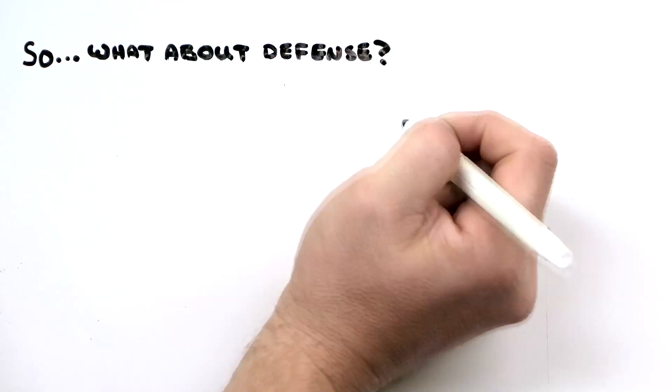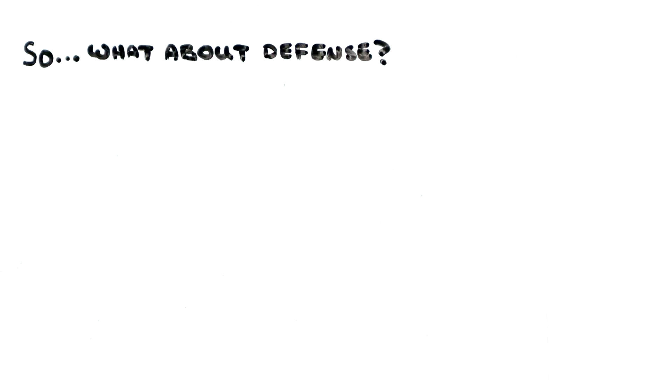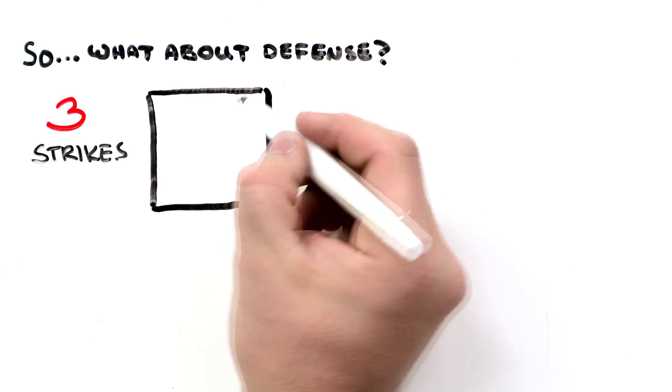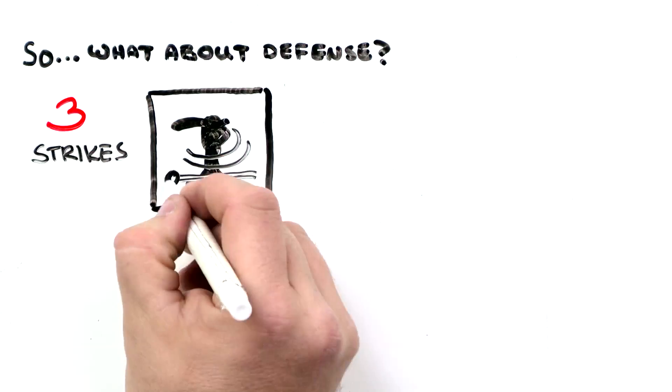So what about the defense? How do they stop these guys from scoring runs? A pitcher tries to get a batter out by throwing three strikes. First, a strike is a swing and a miss.